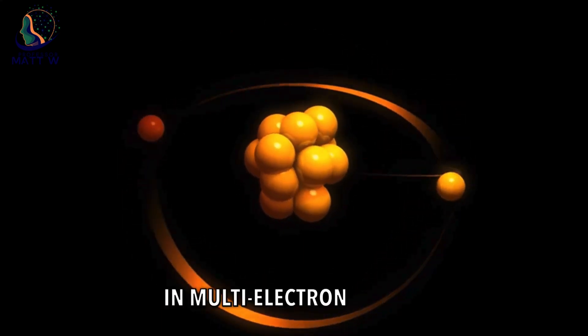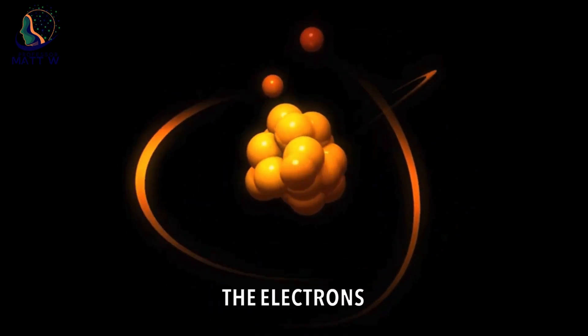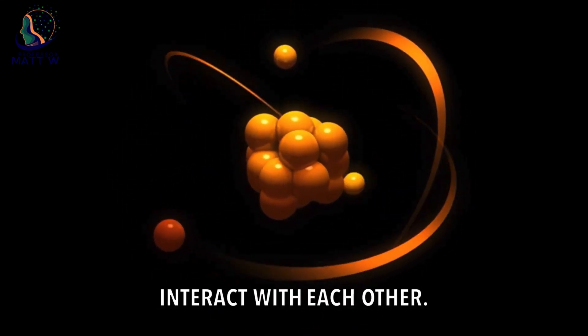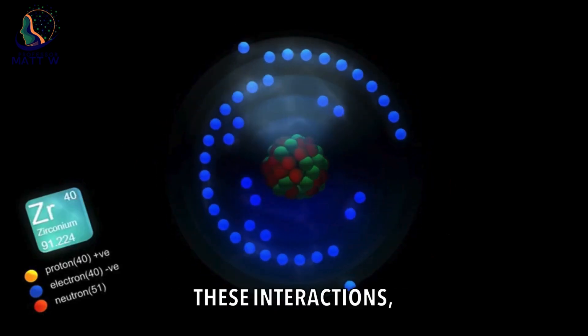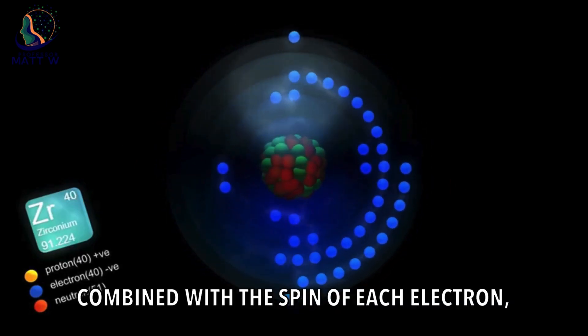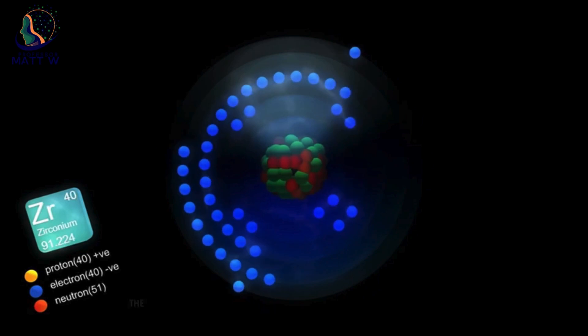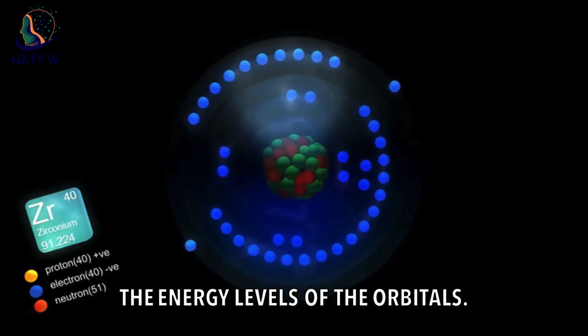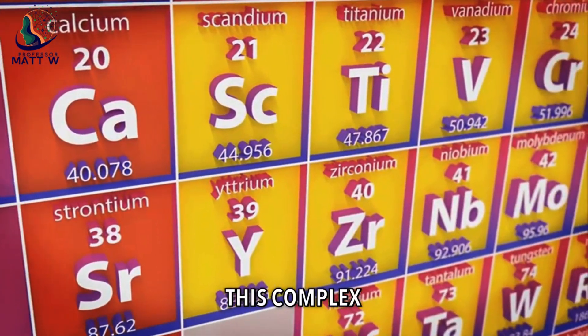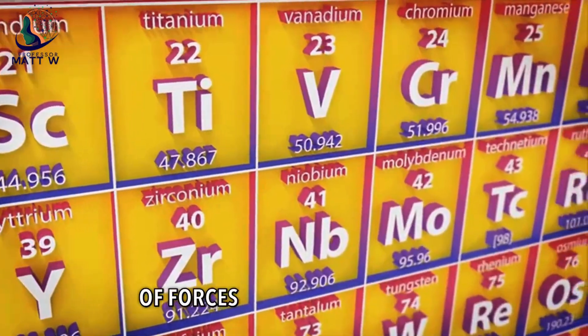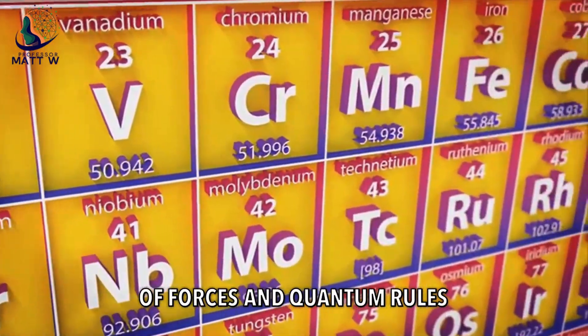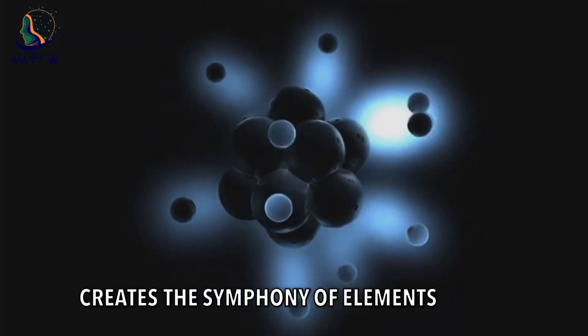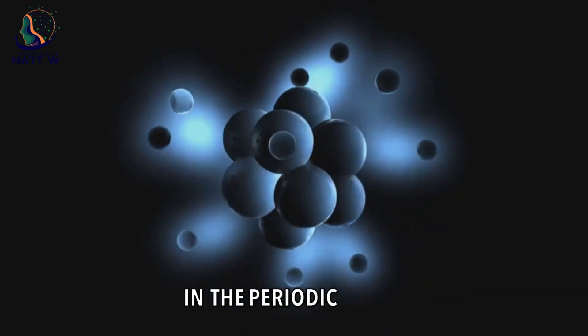Furthermore, in multi-electron atoms, the electrons interact with each other. These interactions, combined with the spin of each electron, further influence the energy levels of the orbitals. This complex interplay of forces and quantum rules creates the symphony of elements we see in the periodic table.